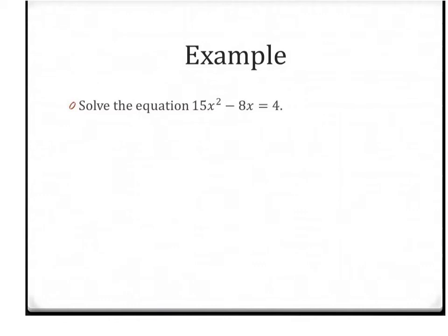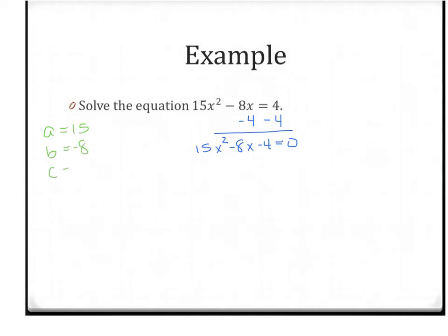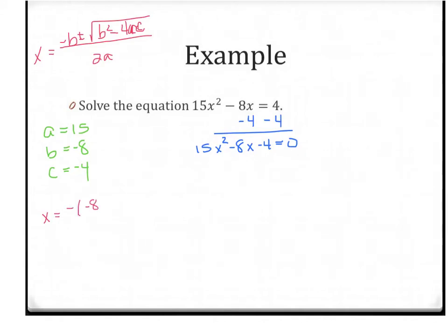Let's try the quadratic formula again. One thing you have to make sure of is it's equal to 0, so I'm going to move the 4 over. It's probably not a bad idea to write out what is A, what is B, and what is C. After we do that, let's plug the numbers into the quadratic formula: negative B plus or minus the square root of B squared minus 4AC, all over 2A. So x equals negative — B is negative 8 — plus or minus the square root of negative 8 squared, minus 4 times A times C, all over 2 times A.